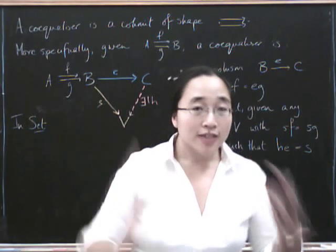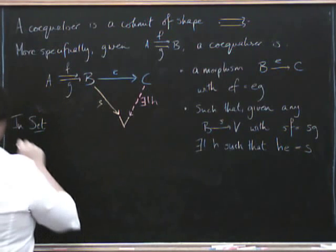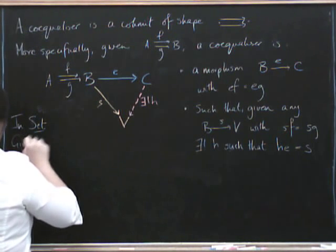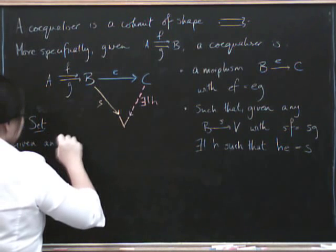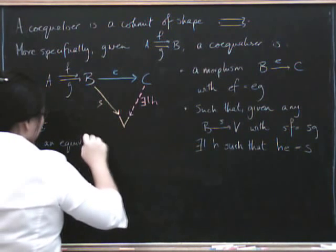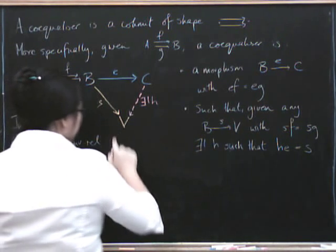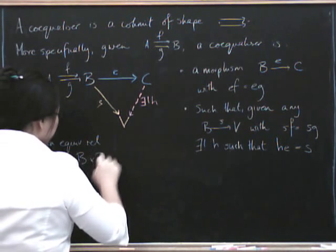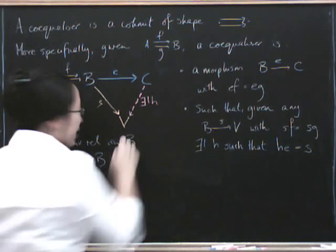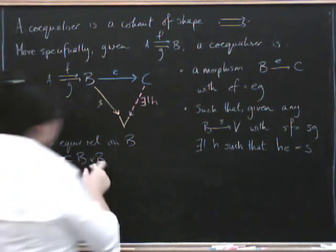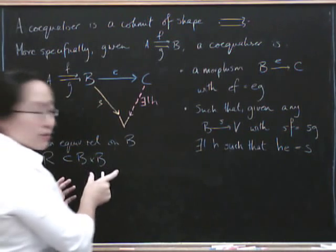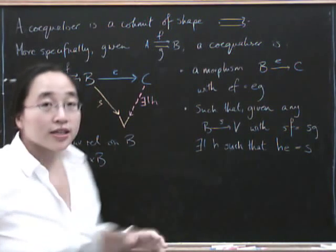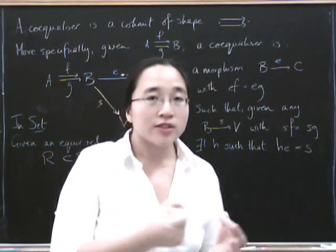So given an equivalence relation, which is going to be expressed as a subset R of B cross B. So this is an equivalence relation on B. Now B cross B is all the pairs of elements of B. They might not necessarily be pairs of equivalent elements.